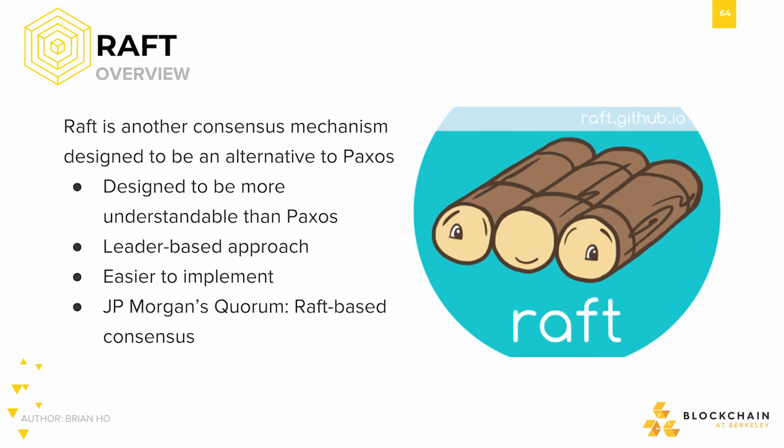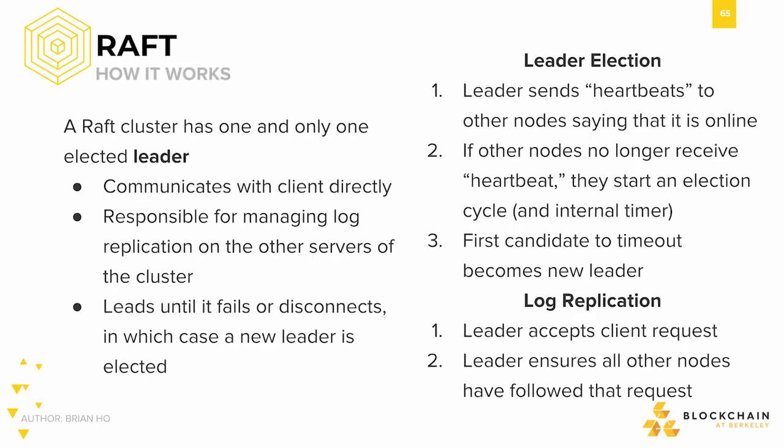The general consensus nowadays is that RAFT is a bit more understandable than Paxos, and easier to implement. Its design is leader-based, meaning that on each round, a leader would be chosen to propose new updates. JPMorgan's Quorum, which was designed to be an enterprise version of Ethereum, swaps out the public proof-of-work algorithm that Ethereum uses for a faster RAFT-based consensus. There's a really good RAFT simulation that will be linked in the reading section, but here's a brief rundown of how RAFT consensus works.